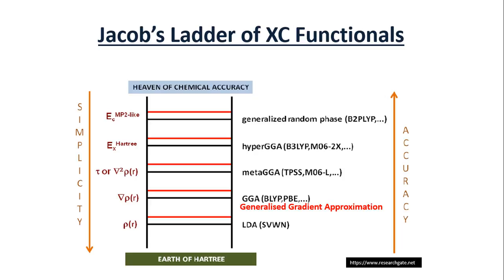And then comes meta-GGA. Meta-GGA takes care of second order correction also. Then comes hyper-GGA, which includes both the LDA approximation, GGA, and Hartree approximation in a certain mixture. Now suppose for B3LYP there is 20% Hartree approximation considered.